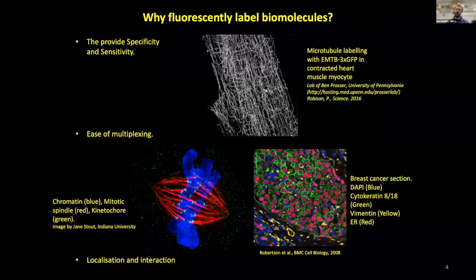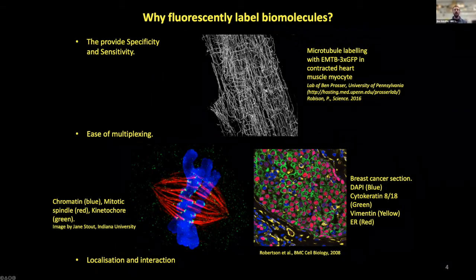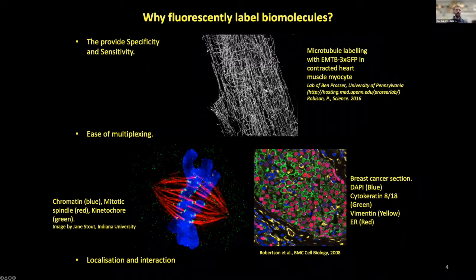Why would you want to label a protein with a fluorescent marker? It gives you immense specificity and sensitivity. Here you can see microtubules labeled and they're all clearly visible in this heart muscle myocyte. You wouldn't be able to see this fine structure if you didn't label them with GFP. They allow you to multiplex so you can look at different things with high contrast within the cell.